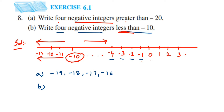So pick any four negative integers from the left of minus 10 and write them down. For example: minus 15, minus 16, minus 17, minus 18. If both answers look the same, just write any other set — whatever number falls on the left-hand side of minus 10, any four will do. These were two simple questions; I hope this is clear. If you have any further questions or doubts, you can drop a comment below. Thank you so much for watching.